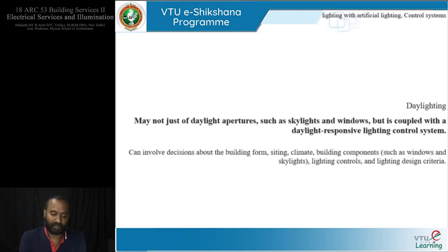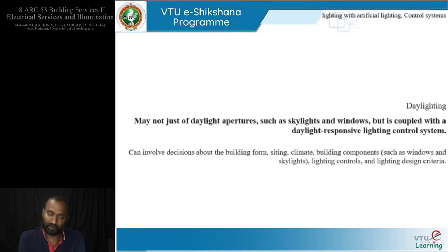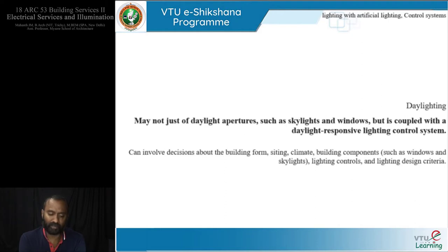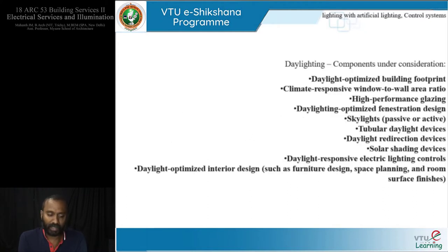Control systems are not just a couple of switches — they come as a system integrated with the daylighting strategies. Some of the decisions that passive daylighting strategies could involve include: building form, the way it is oriented, the climate, the building components, apertures like windows and skylights, the lighting control strategies, and the lighting design criteria. These are the components that one can consider while considering daylighting as a strategy.